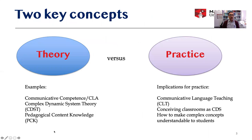So the two key concepts that we are usually engaged in, in academia and in other areas, are theory versus practice. The conventional, traditional way of thinking about theory and practice is that usually theory informs practice. So all those who are engaged in one sort of profession or another in society usually learn what to do based on the theories related to their field.